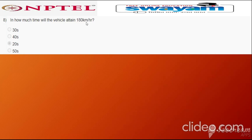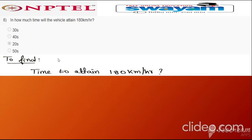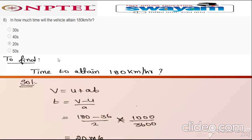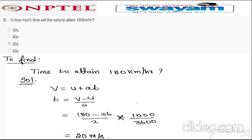Question eight: in how much time will the vehicle attain 180 km/h? Using t = (v − u) / a, with v = 180 km/h and u = 36 km/h, both converted to m/s, and a = 2 m/s², we get t = 20 seconds. The correct answer is option three: 20 seconds.